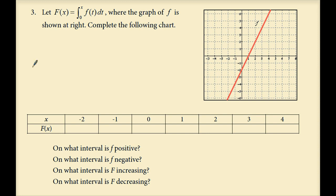The lower endpoint of integration is 0, so we calculate areas beginning there. To find F of negative 2, we need the area from 0 to negative 2 — a trapezoid: bases 2 and 6 sum to 8, times height 2, equals 16, half of that is 8. The area is negative 8. Since we moved backwards, the function value F of negative 2 is positive 8.